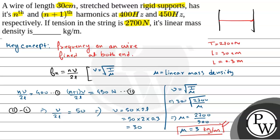So we know that the linear mass density is equal to 3 kg per meter. So the answer is 3. Hope you understand it. Let's take a look.